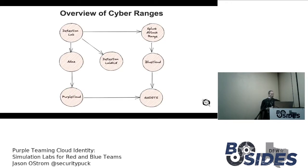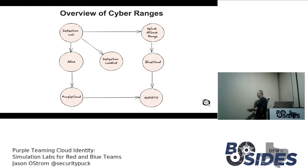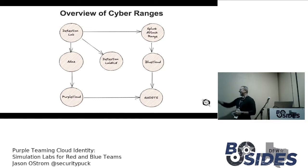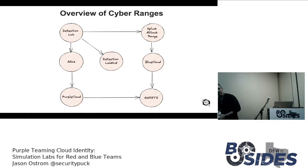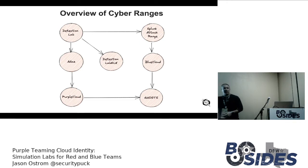I'm going to talk about the old ones that have been around a while and then the new ones. The classic ones are Detection Lab, Splunk Attack Range, and ADAS. Then there's something called Ghost if you've never heard of that. And then I'll segue into my tools: Blue Cloud and Purple Cloud.